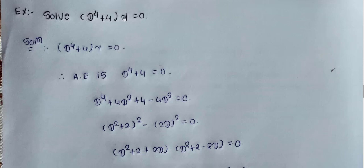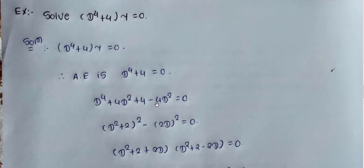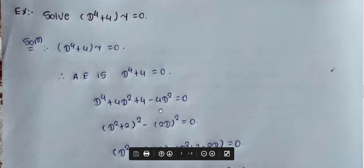Next example: solve (d⁴ + 4)y = 0. The auxiliary equation is d⁴ + 4 = 0. We add and subtract 4d²: d⁴ + 4d² + 4 - 4d² = 0, which gives (d² + 2)² - (2d)² = 0.